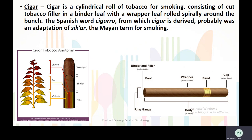The next terminology is cigar. A cigar is a cylindrical roll of tobacco for smoking, consisting of cut tobacco filler in a binder leaf with a wrapper rolled spirally around it. The Spanish word from which cigar is derived was probably an adaptation of the Mayan term for smoking.